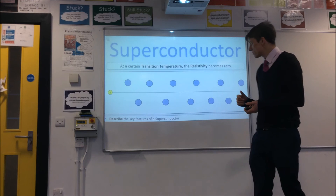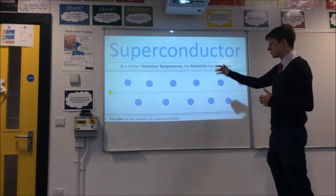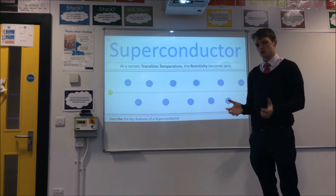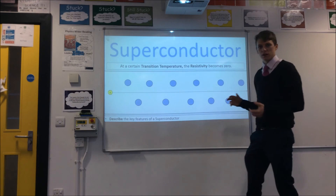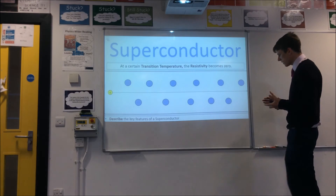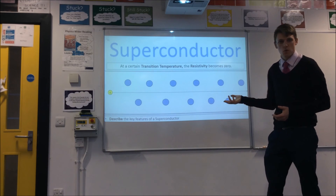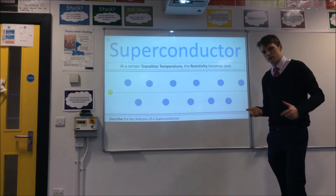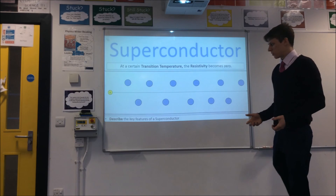A special type you may have heard of is the superconductor — which sounds awesome. A superconductor is interesting because if you reach a certain temperature called the transition temperature, the resistivity of the material suddenly becomes zero. In a superconductor, the lattice atoms are basically fixed in place and your electron can pass through unopposed by any of the structural atoms. If it's not colliding with any of these, it's not transferring any energy to thermal energy, so resistance is zero.